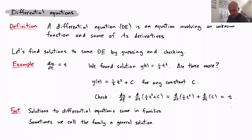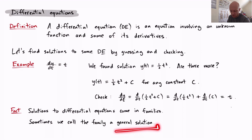There's a piece of terminology we use: we call that family a general solution. So it sounds like a singular — just one solution — but we call a family of solutions a general solution. Soon we'll be talking about pinning down one member of that family to get a particular solution to the differential equation.